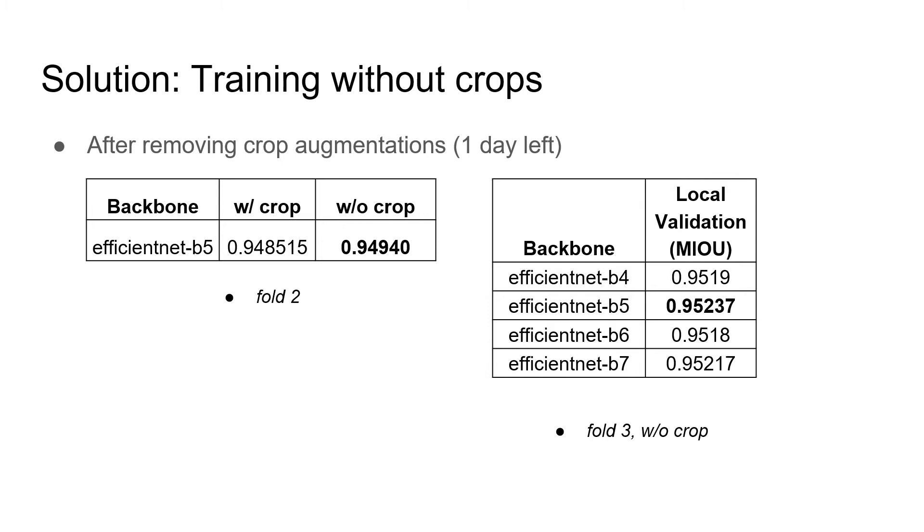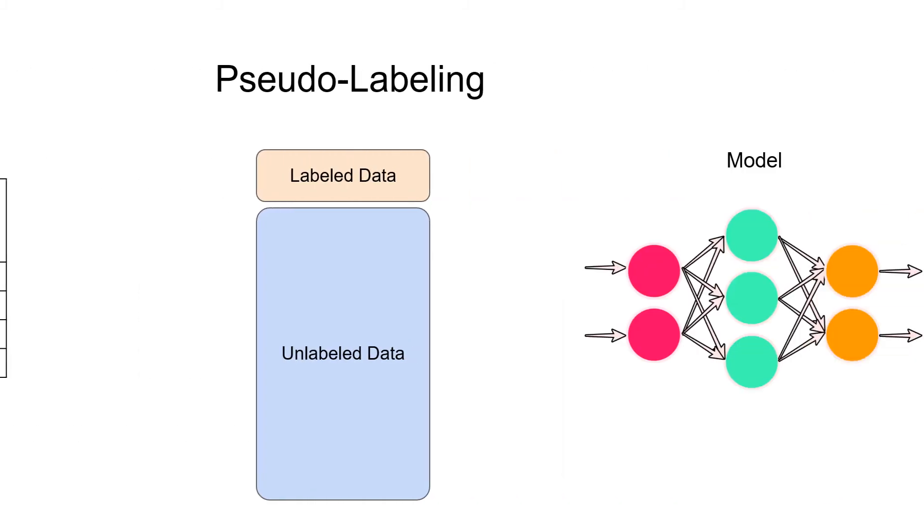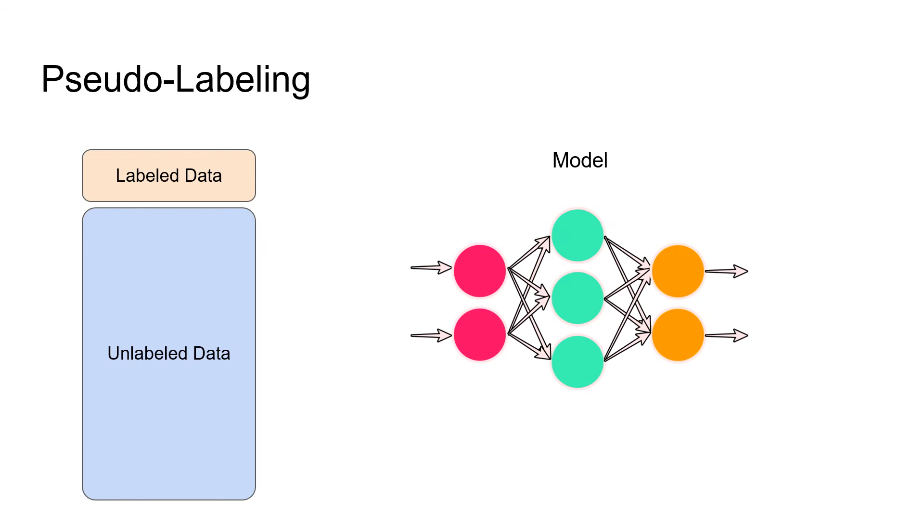Now my teammate, Almazin, will discuss strong techniques we used in this competition. One technique that came in handy in this challenge was pseudo-labeling. Pseudo-labeling is applicable when there is a lot of unlabeled data, and since 95% of the dataset was not annotated, we used this approach to boost our scores.